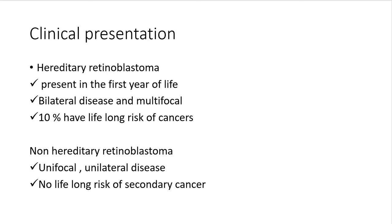The clinical presentation of hereditary retinoblastoma usually occurs in the first year of life, before 12 months. It is bilateral, multifocal or trilateral — especially if the pineal gland is affected, meaning there is a brain tumor as well. 10% of patients have a lifelong risk of other cancers such as osteosarcoma and other tumors in the body. Non-hereditary retinoblastoma is usually unifocal and unilateral, with no lifelong risk of secondary cancers — other than slight risk from chemo or radiotherapy treatment.